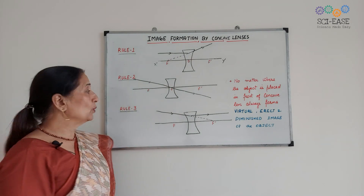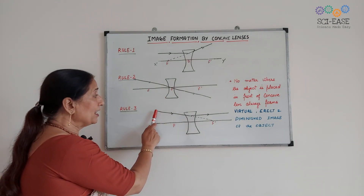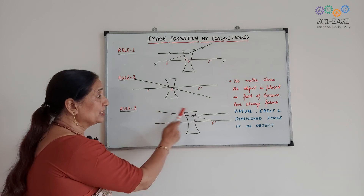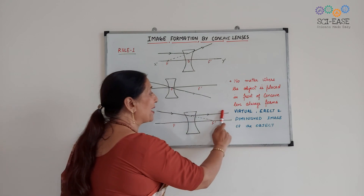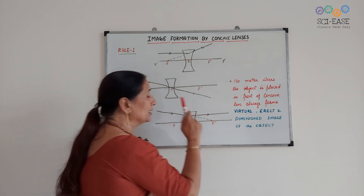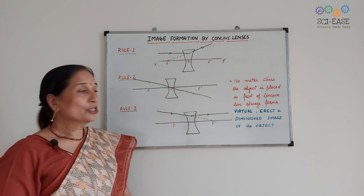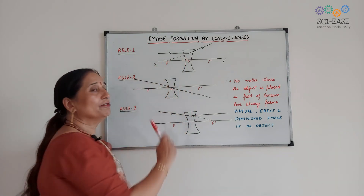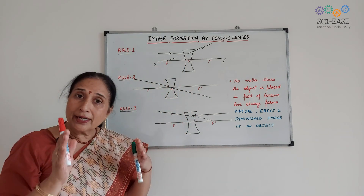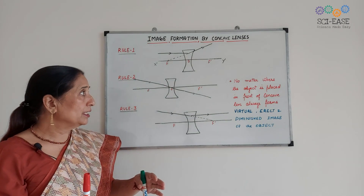The third rule is a ray of light which appears to come from focus becomes parallel to the principal axis. So this is just the opposite of the first rule. So here also three rules are followed.